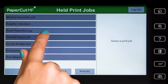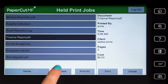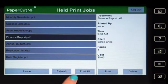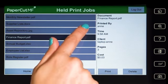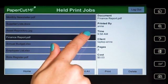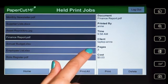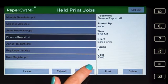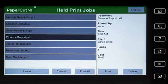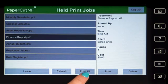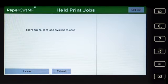By selecting a print job, PaperCut MF will display the document's details and allow you to print or delete the job. To release all jobs in the queue, simply press Print All.